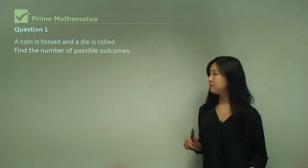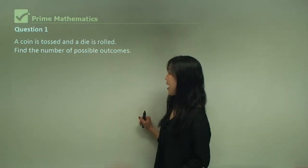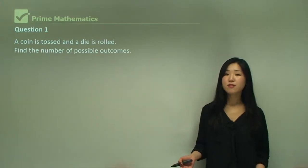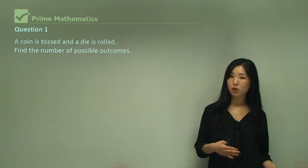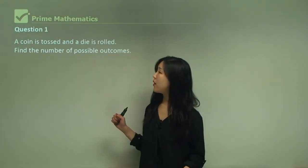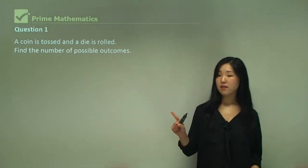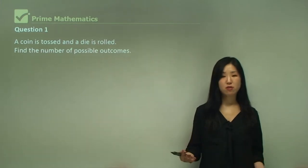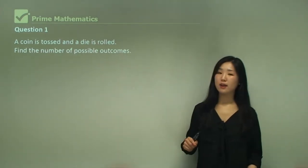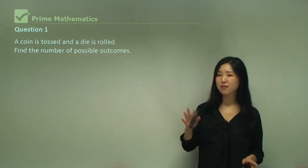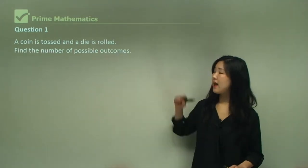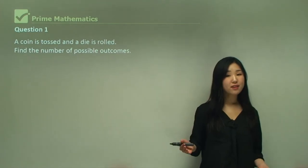Let's start with question one. A coin is tossed and a die is rolled — find the number of possible outcomes. The coin is one event and the die is another event, and they're going to be tossed together. A coin has two sides, and a die has six sides.